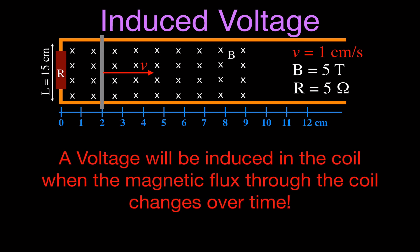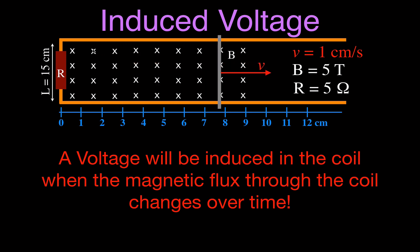Now this is an important point that you should always keep in mind: a voltage will be induced in a coil — and in a sense here we have a single loop of wire — and a voltage will be induced in that coil when the magnetic flux through the coil changes over time. So we're going to move the bar across that magnetic field, and we want to know when will the flux be changing, and therefore when will there be a voltage induced.